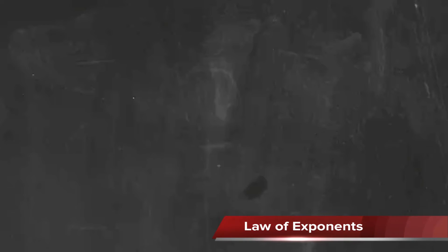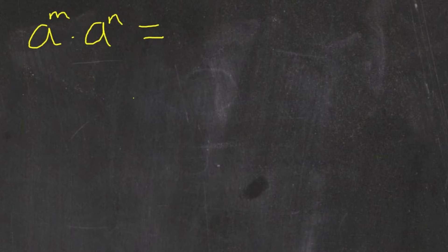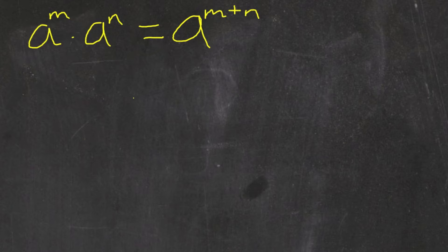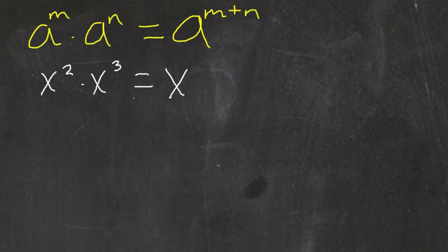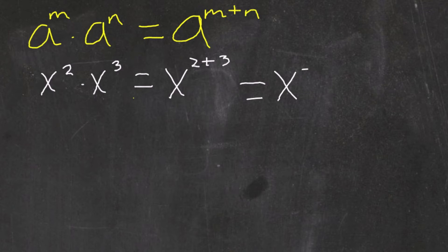Hi, my name is Victor, and today I'm going to go over the law of exponents. The law of exponents tells us that if I have two numbers multiplying each other, and they have the same base but different exponents, we can rewrite this as a single number with the same base, and we just add up the exponents. For example, let's say I had x squared times x cubed. We can rewrite this as a single expression by taking the square and the cube and adding them up. So 2 plus 3 would give us a power of 5.